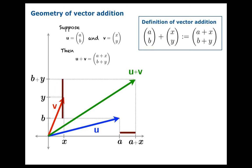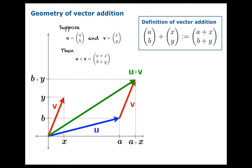There's our picture of u plus v — it's got to have those components a plus x and b plus y. What we'll notice is that we could shift v over into this position, and there's a nice picture. If you want to add u and v, one way to get a picture of u plus v is to take the tail of v, attach it to the tip of u, and then create a new vector that goes from the tail of u to the tip of v. We might call this the tail-to-tip addition rule.